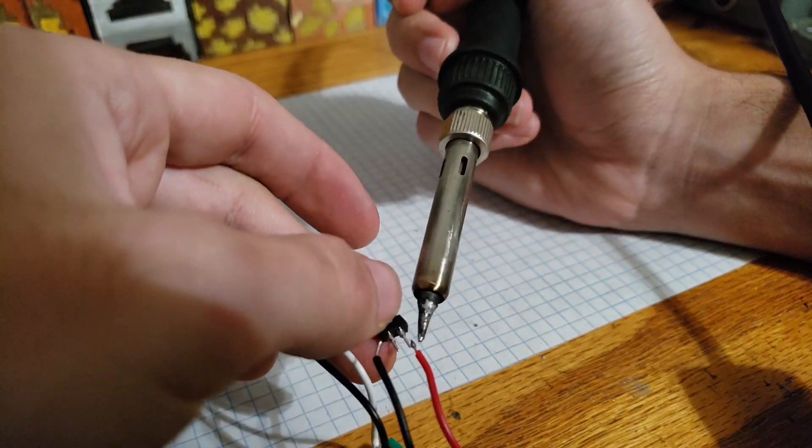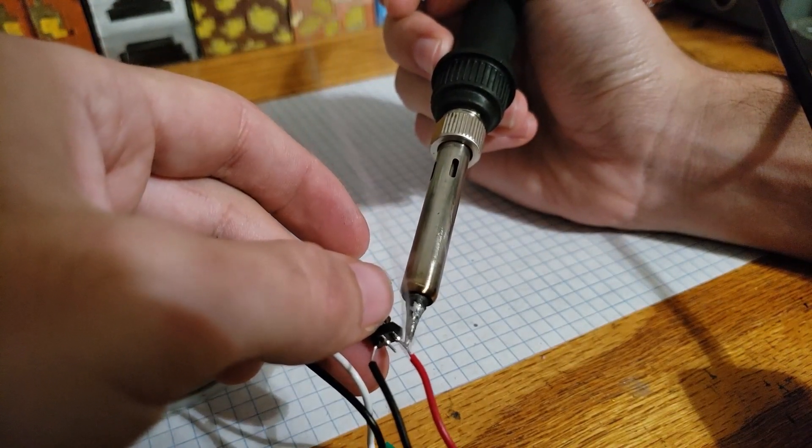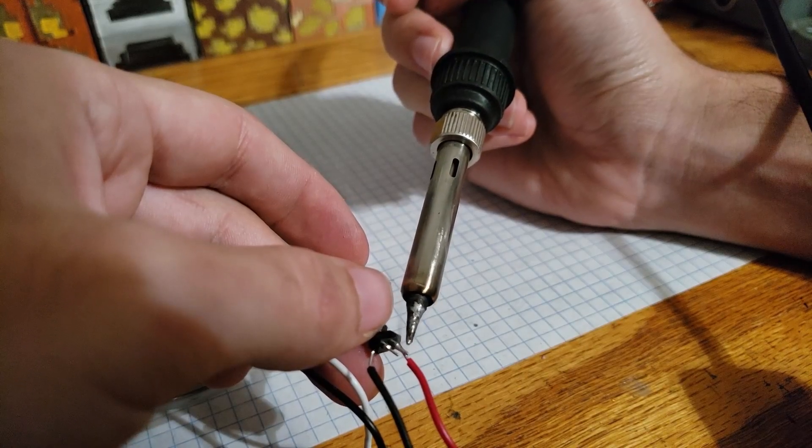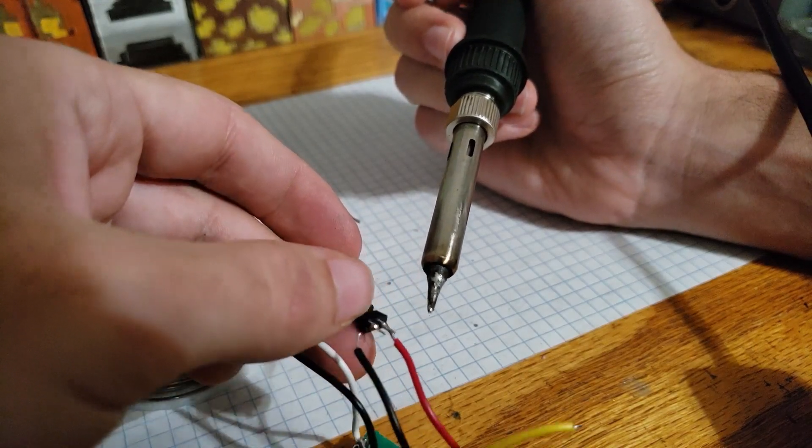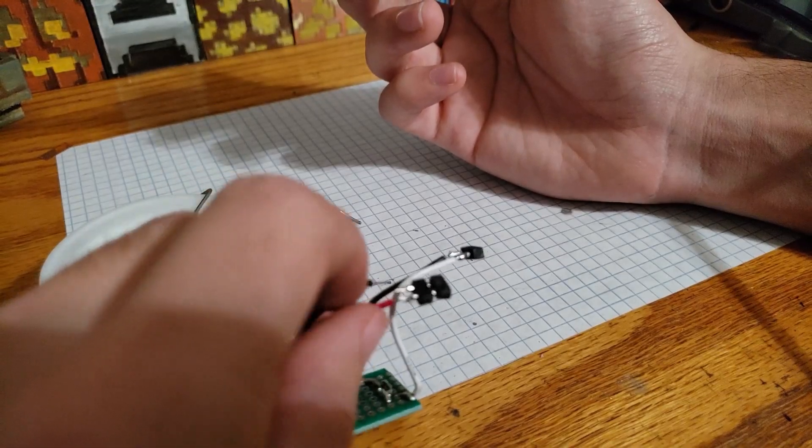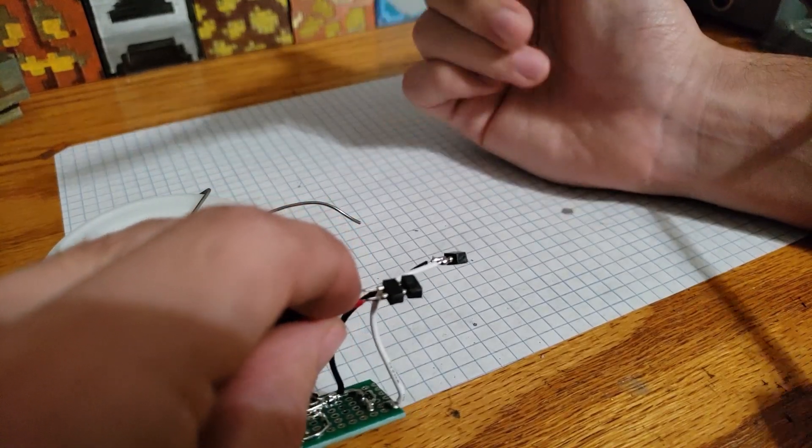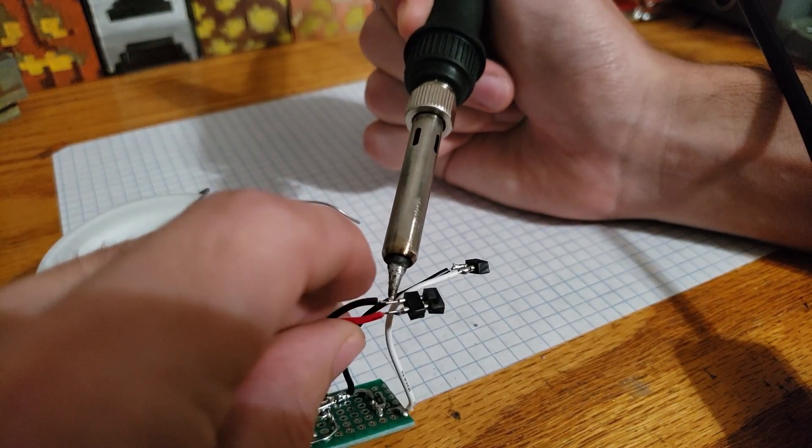Right here I'm gonna start off with the red wire. Solder it onto the header. Once it's soldered, I'm gonna align the black wire with the header and solder that one on.